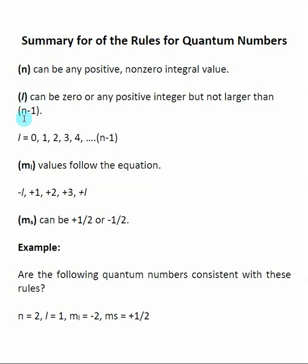L is determined by the n value. The possible values for L start at zero and go through the positive integers, but cannot be larger than n minus one. So you start at zero and count up until you get to n minus one — that gives you all the possible L values you can have.